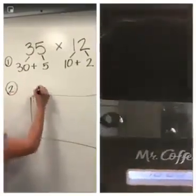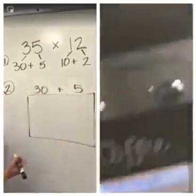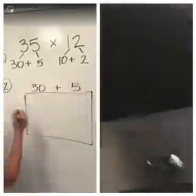So on the top, I'm going to put 30 plus 5. And on the side, I'm going to put 10 plus 2.